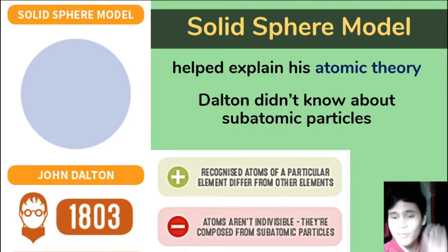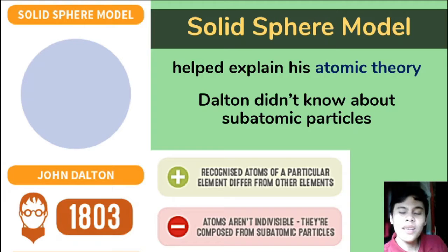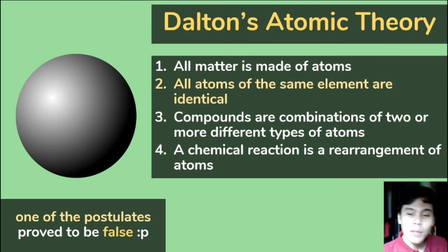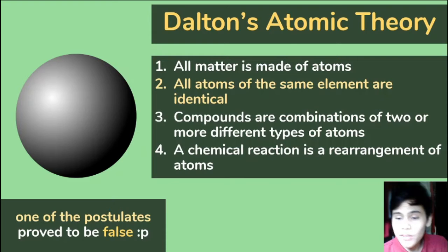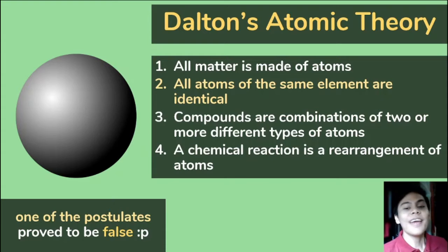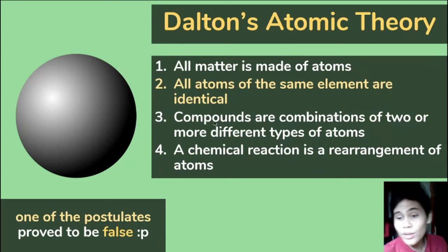His model is called the solid sphere model — literally just a ball. It helped explain his atomic theory, but the problem is it didn't talk about the subatomic particles. It's not actually completely indivisible. According to his atomic theory: all matter is made of atoms; all atoms of the same element are identical, so they have an ID as elements; compounds are combinations of two or more different types of atoms; and a chemical reaction is a rearrangement of these atoms. One of these postulates — the one that's color coded — actually proved to be false. We'll talk about that later in the form of isotopes.